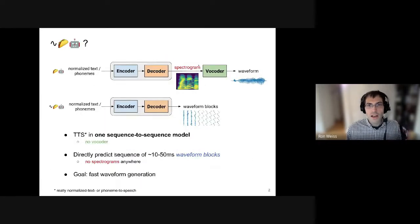So what is Wave Tacotron? Well, the idea is we want to train a TTS model in a single sequence-to-sequence model that can go directly from normalized text or phoneme sequence to waveform samples without having any intermediate representations like a spectrogram and without having multiple neural networks like a separate neural vocoder. And the way we're going to do this is we're just going to train a model to directly predict the sequence of waveform blocks of about 10 to 50 milliseconds, and again, no spectrograms anywhere. The goal of this work, in addition to just simplifying the architecture, is to do fast waveform generation.